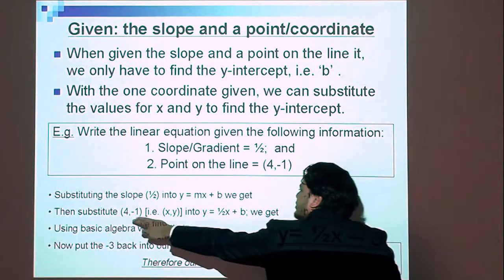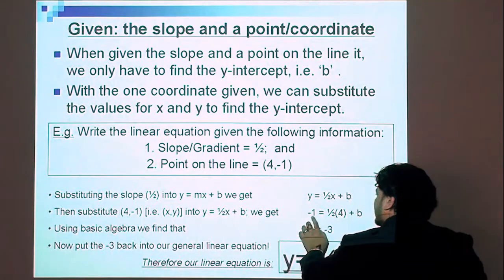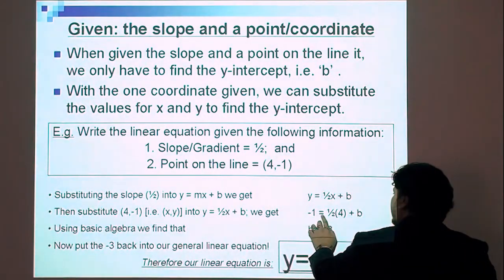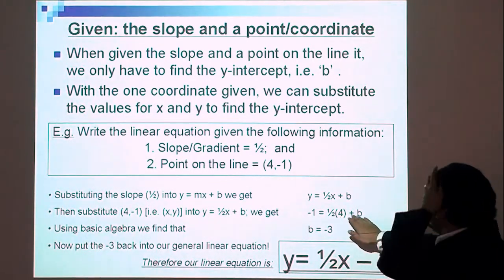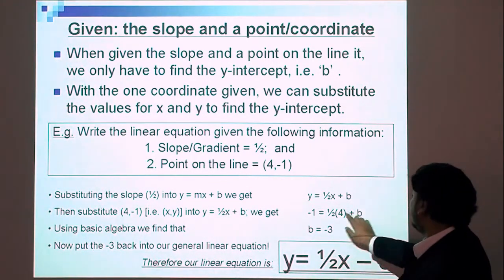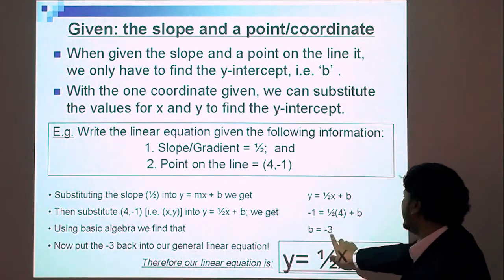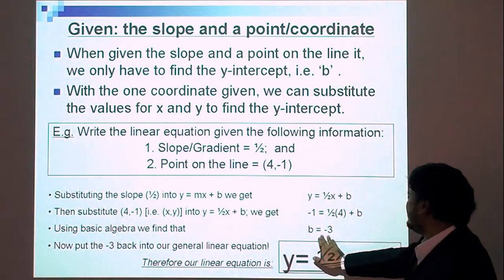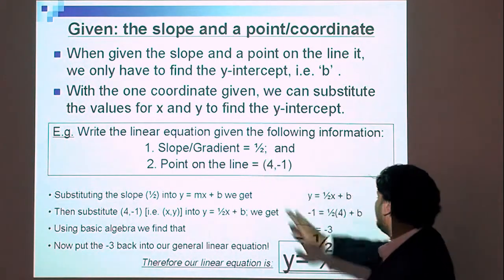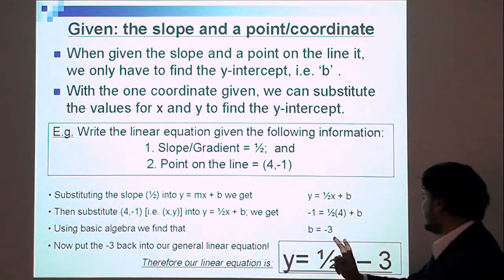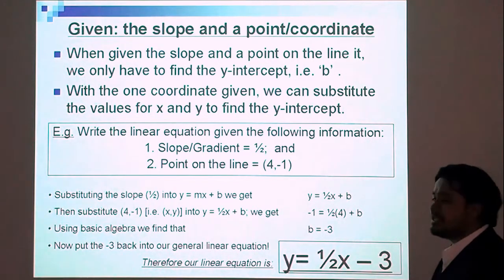Now that we have one-half x, we know the slope and we are looking for b. x is 4 and negative 1 is the y value, so: negative 1 equals one-half times 4 plus b. After substituting, solve for b — one-half times 4 is 2, then negative 1 minus 2 gives us negative 3. So b equals negative 3. Now we have our slope and our b, and the solution is y equals one-half x minus 3.